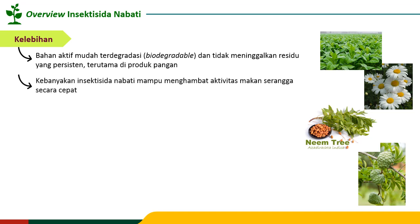Kebanyakan senyawa insektisida nabati bersifat sebagai penghambat perilaku makan serangga. Senyawa-senyawa tumbuhan itu sebagian besar dapat menyebabkan serangga menjadi kacau perilaku makannya, atau berubah melalui mekanisme racun kontak atau racun perut. Racun kontak bekerja begitu serangga menyentuh bagian tanaman yang sudah diberikan insektisida nabati, serangga akan mati.